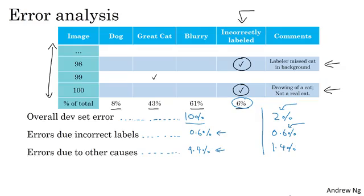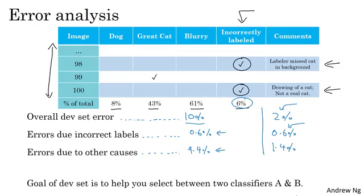And if you remember the goal of the dev set, the main purpose of the dev set is, you want to really use it to help you select between two classifiers, A and B. So if you're trying out two classifiers, A and B, and one has 2.1% error, and the other has 1.9% error on your dev set, but you don't trust your dev set anymore to be correctly telling you whether this classifier is actually better than this, because 0.6% of these mistakes are due to incorrect labels, then there's a good reason to go in and fix the incorrect labels in your dev set.